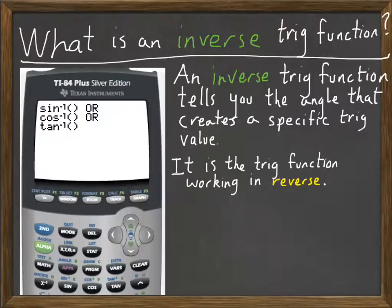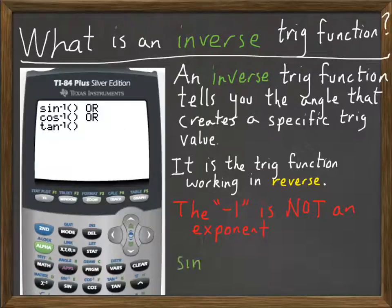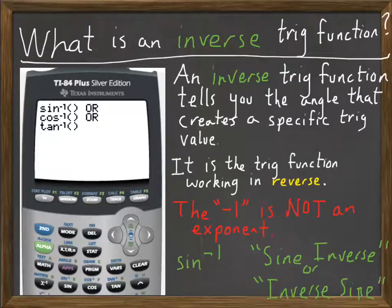You write these as sine minus 1, cosine minus 1, or tangent minus 1. But even though it looks like that, the minus 1 is not an exponent. It signifies that it's an inverse. And you say it as sine inverse, or inverse sine, or inverse cosine, or inverse tangent, or whatever it is. The minus 1 means the inverse.